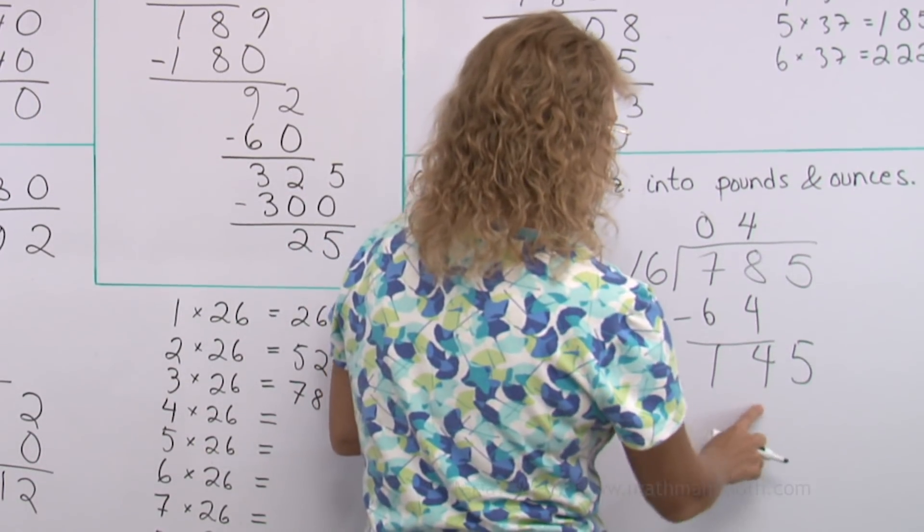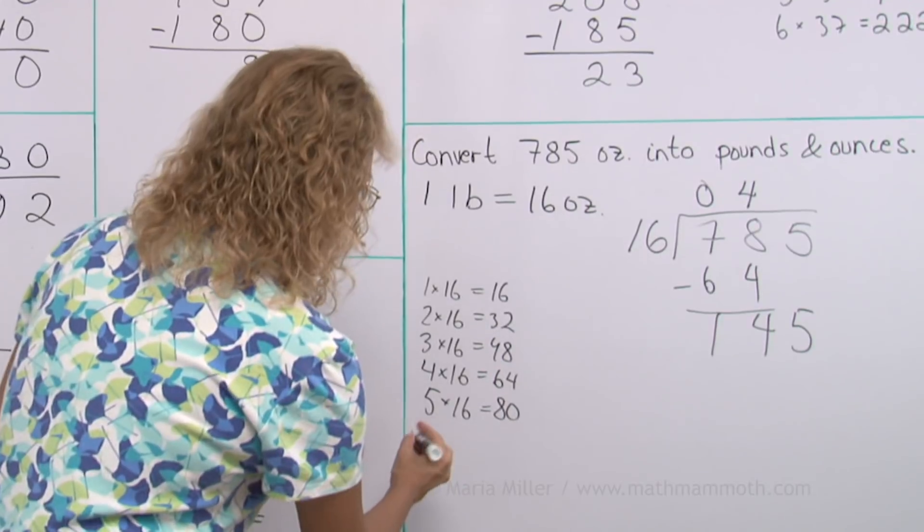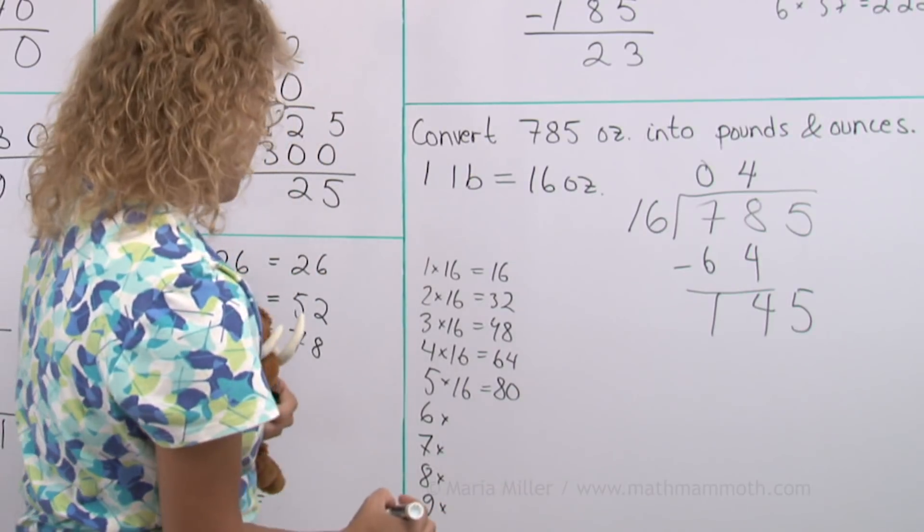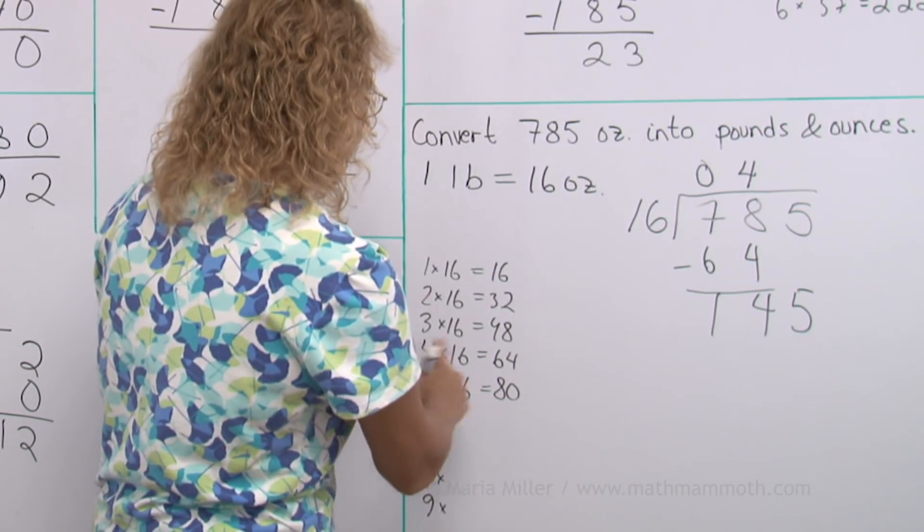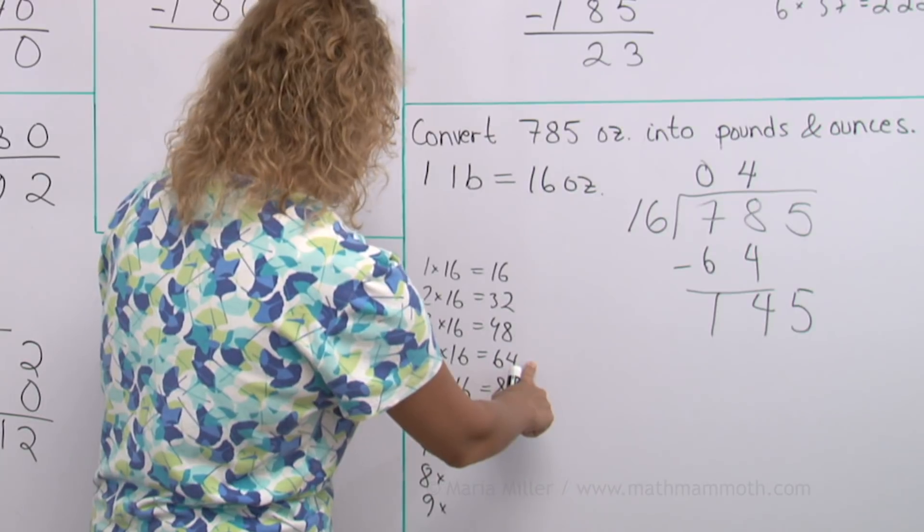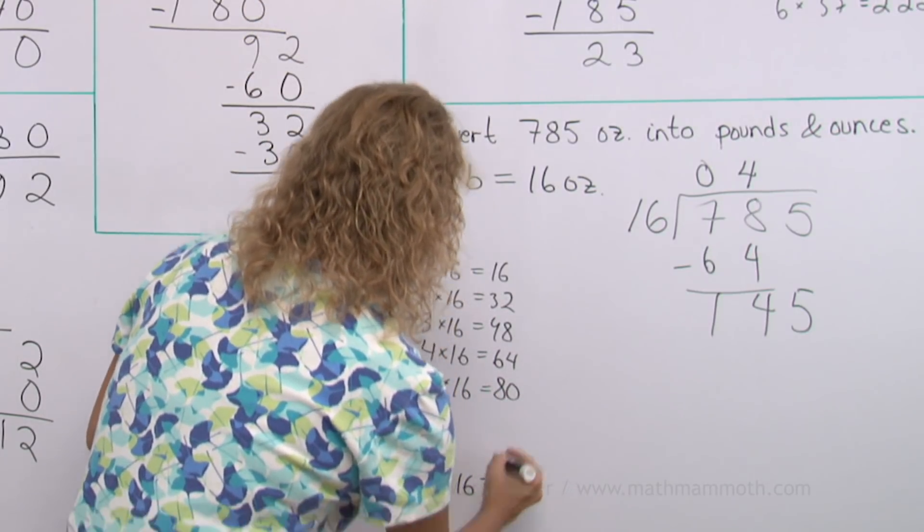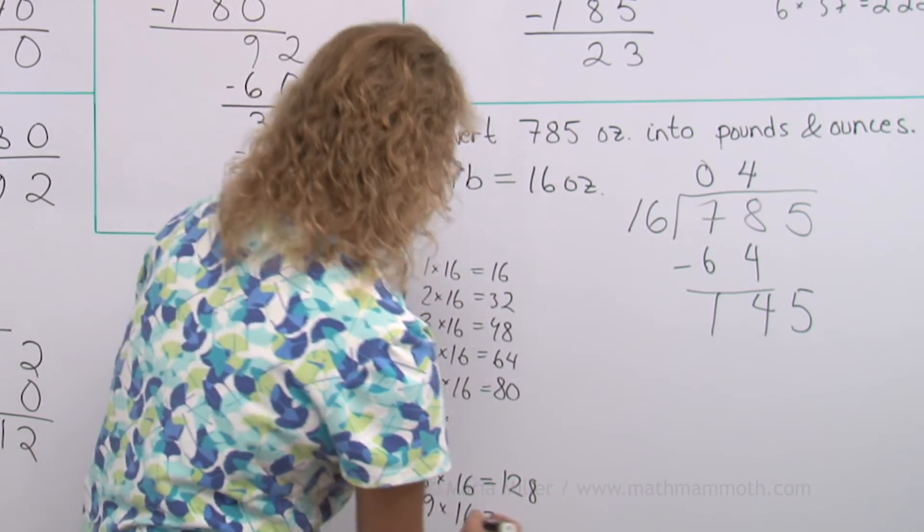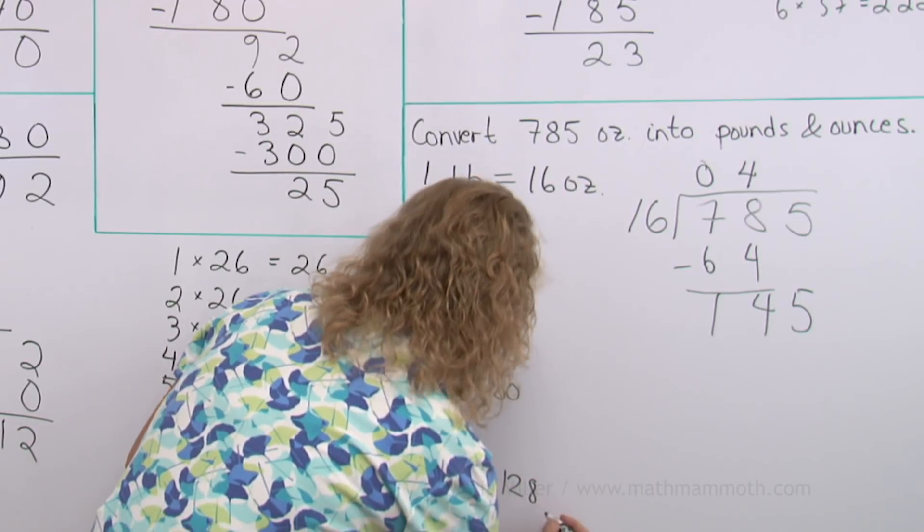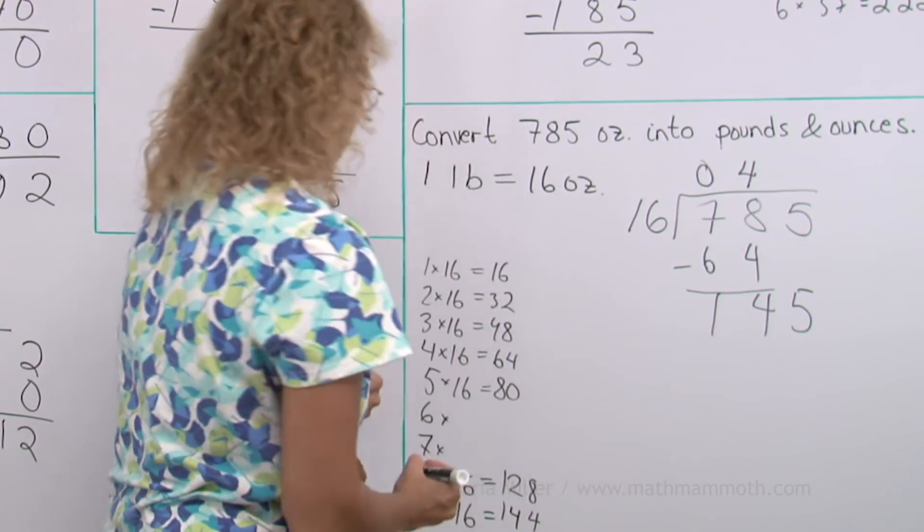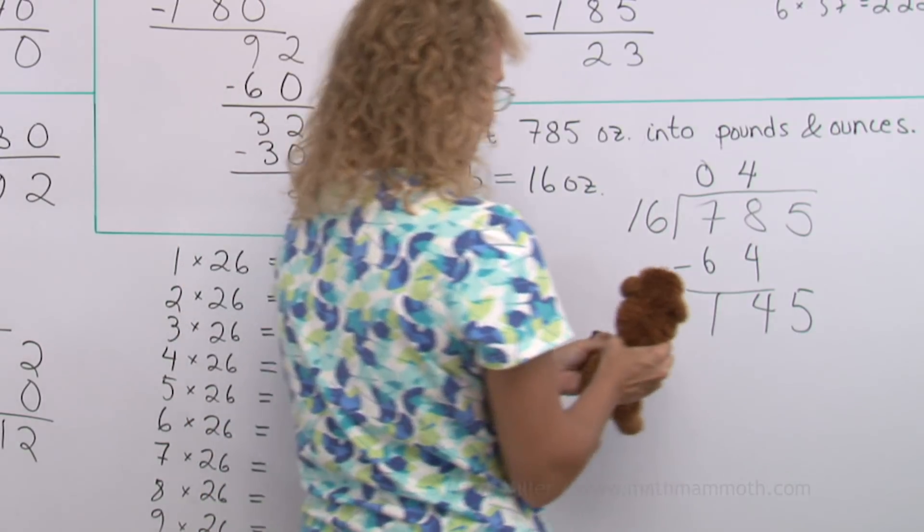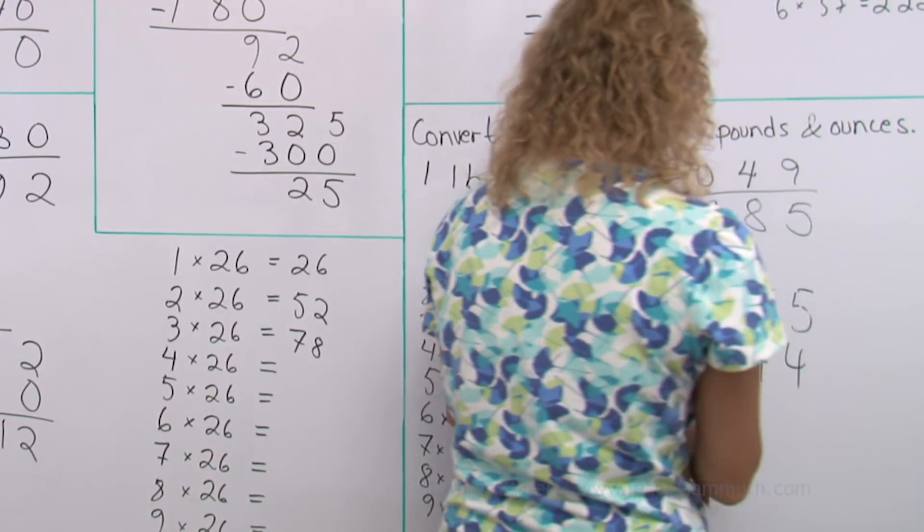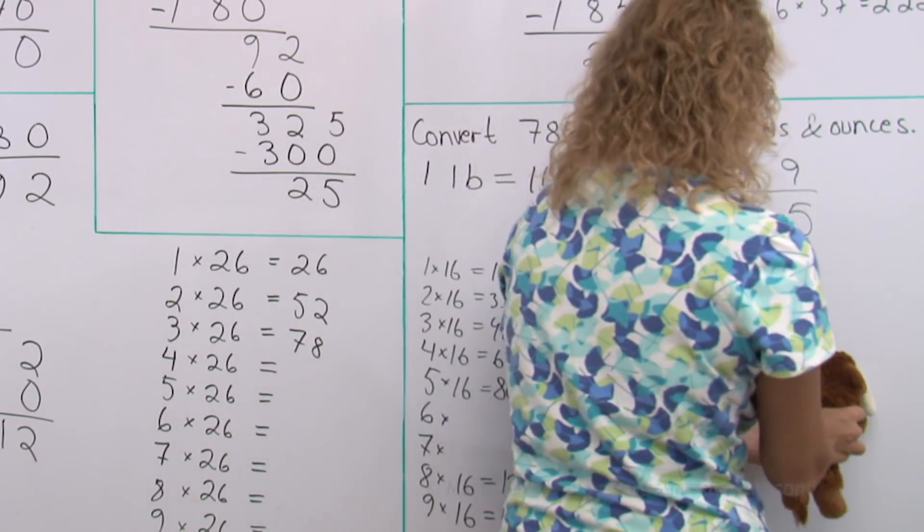How many times does 16 go into 145? Maybe we need to continue this multiplication table here. Okay. Let me see. If I take 4 times 16 is 64. Then I double that. It is 128 here. And then 9 times 16. Alright. Now go on, Matty. There we go. 144. And then subtract 1.